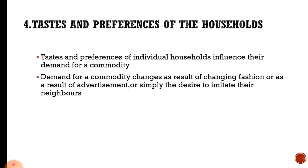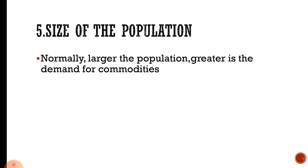The fourth determinant is taste and preferences of the household. The taste and preferences of individual households influence demand for a commodity. The fifth determinant is size of the population. Normally, the larger the population, the greater is the demand for commodities.